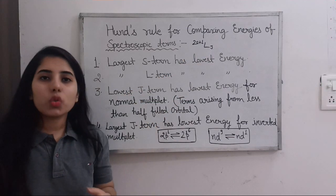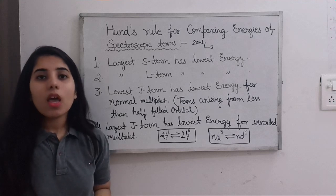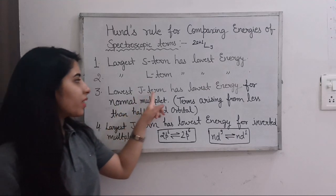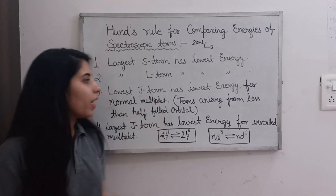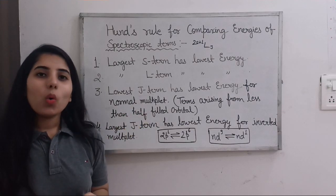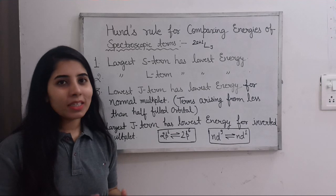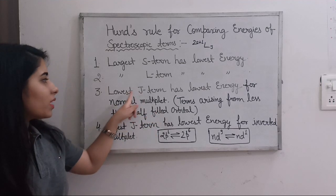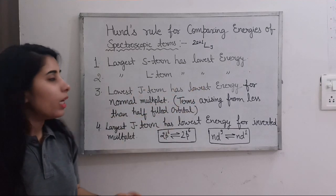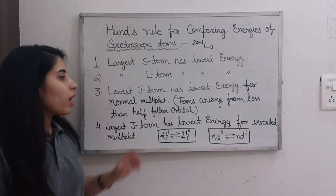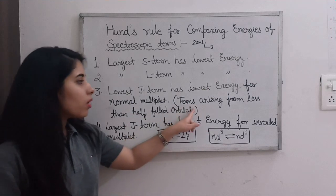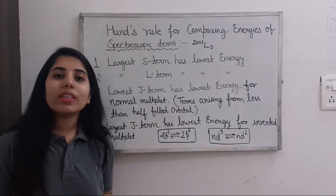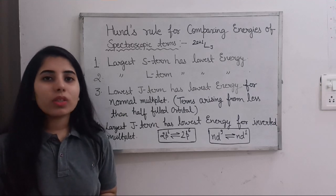The third rule is: the lowest J term has the lowest energy, but this applies for normal multiplets. J may have just one value or more than one value depending on the situation of the element. So for normal multiplets, the term with the smallest J value will have the lowest energy.